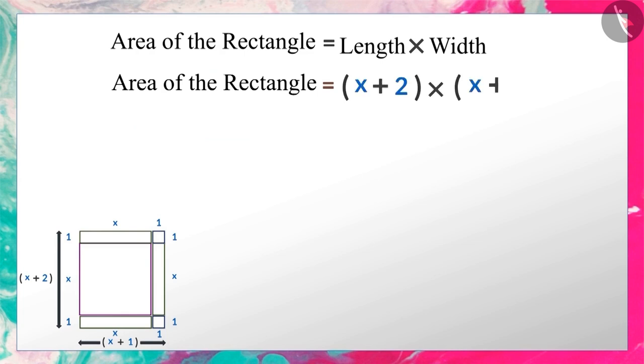Therefore, we can say that the algebraic expression x squared plus 3x plus 2 can be written as x plus 2 multiplied by x plus 1. The product of x plus 2 and x plus 1 gives us the same algebraic expression.